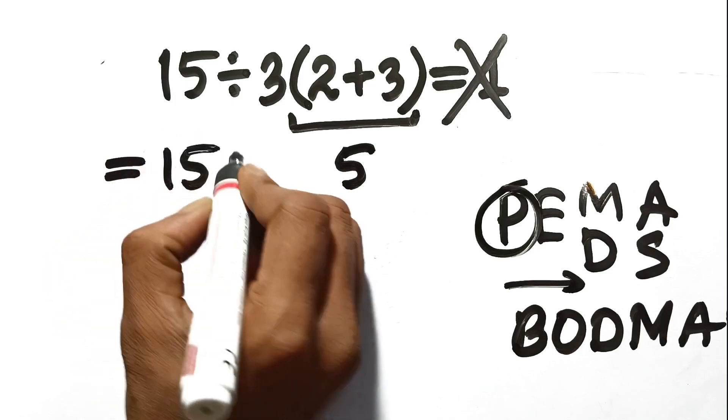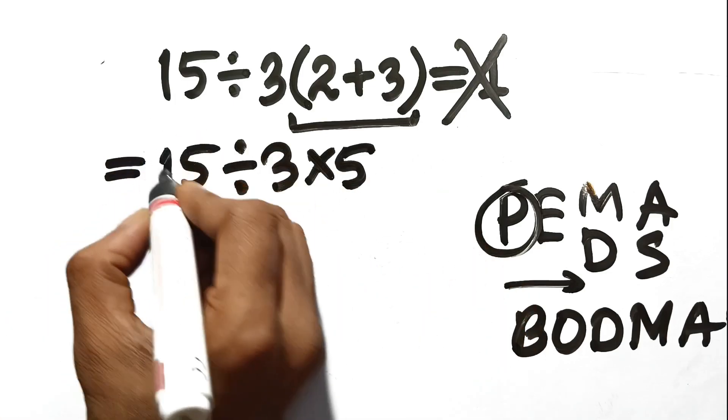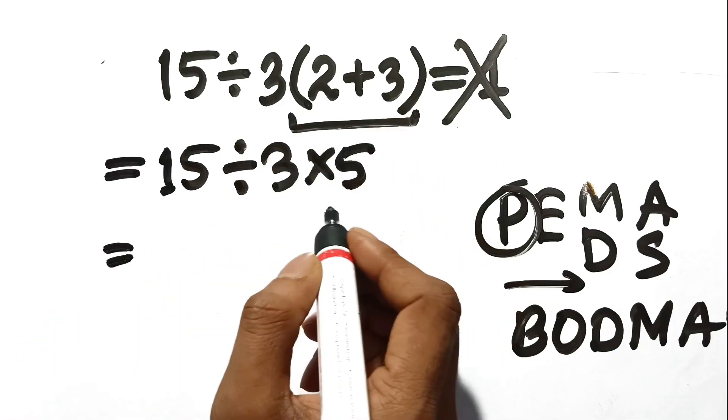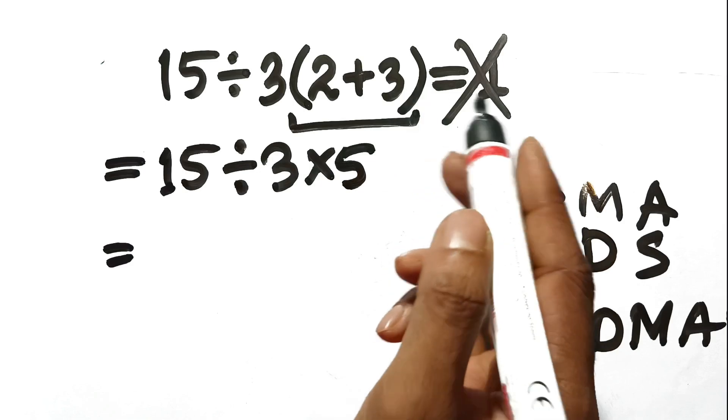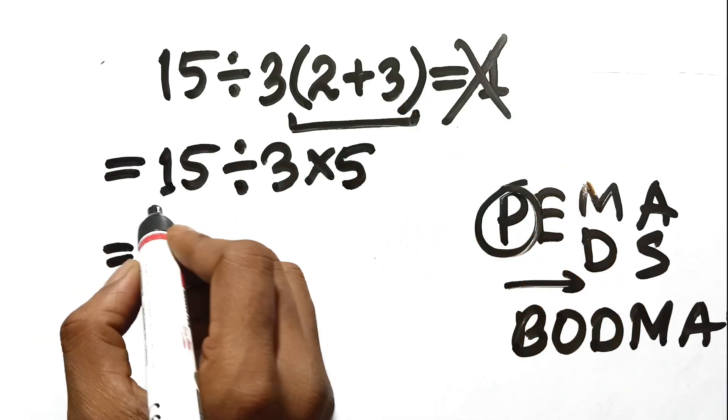We have 15 divided by 3 times 5. We replace the parentheses with a multiplication sign now to make it clear. If you do the multiplication first, you're technically moving right to left, which is forbidden here. We have to look at the left side first.